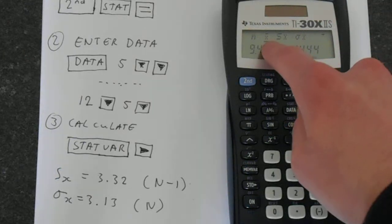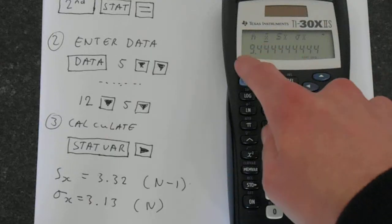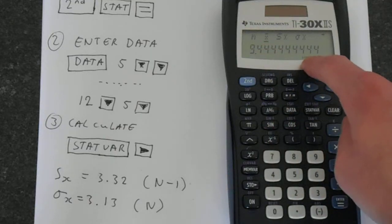Press the down key. We get to X bar. X bar is our mean. So that gives us the mean of the data.